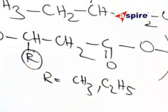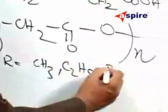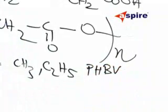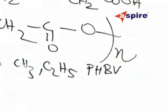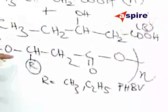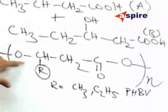This is named as PHBV and the ratio of these two compounds A and B decide the properties of this co-polymer.